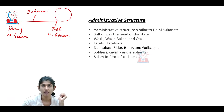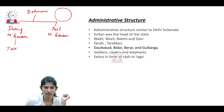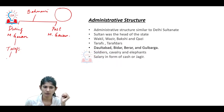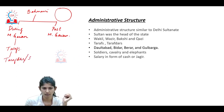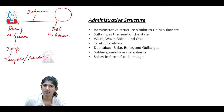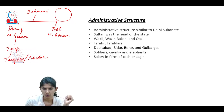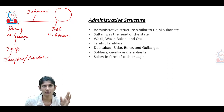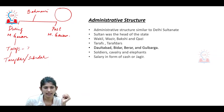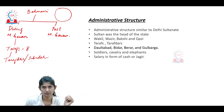The area of the kingdom during the period of Gawan was divided into Tarafs - each Taraf being a province, looked after by a Tarafdar or a Subaydar. Before Mohammed Gawan, there were already four Tarafs: Daulatabad, Bidar, Berar, and Gulbarga. During Mohammed Gawan's period, he further divided those into eight Tarafs.